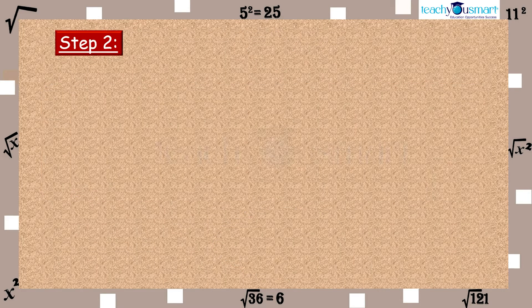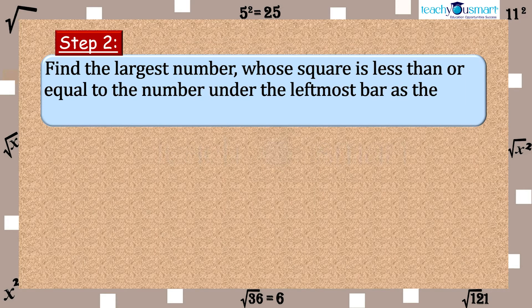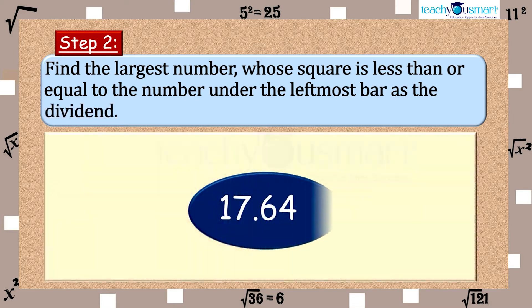Step 2. Find the largest number whose square is less than or equal to the number under the leftmost bar as the dividend. Take this number as divisor and quotient.